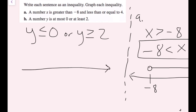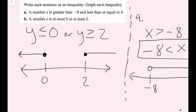Now I graph. I have my two values, 0 and 2. For Y ≤ 0, I fill in the circle and draw the arrow to the left for values below 0. For Y ≥ 2, I have a closed circle at 2 and draw the arrow to the right for values above 2, including 2. This is how to graph our OR compound inequality.